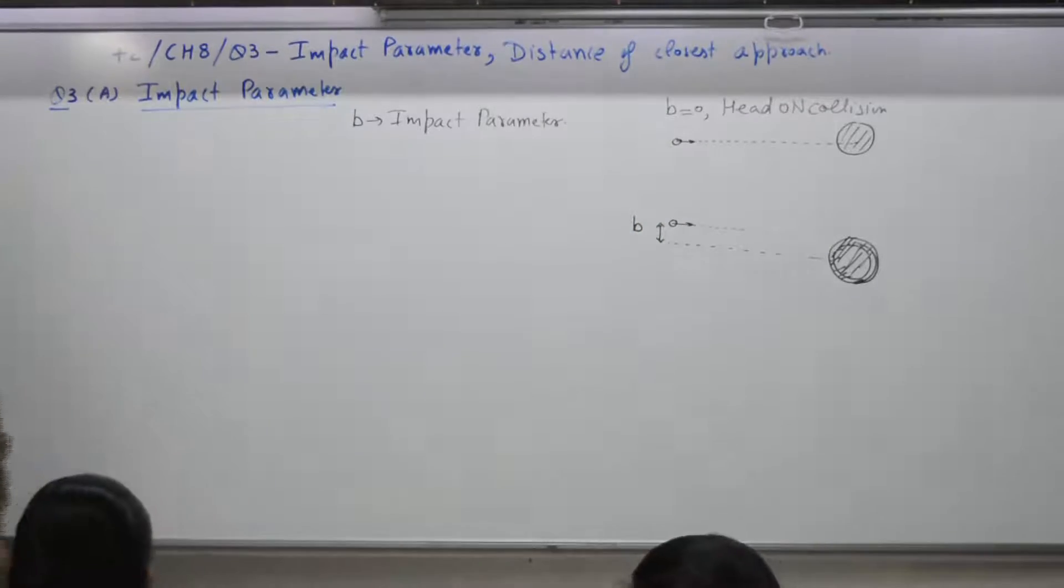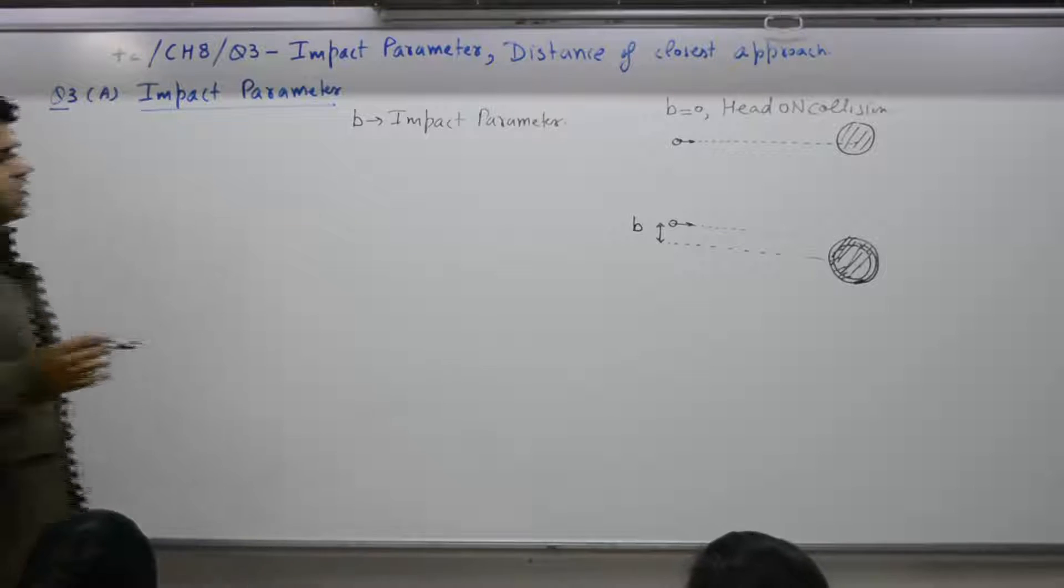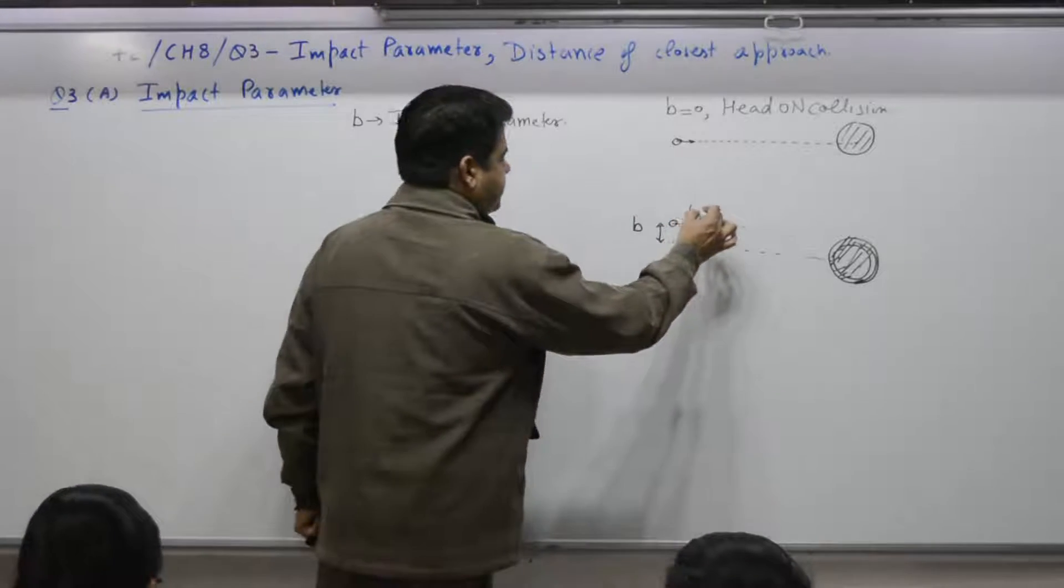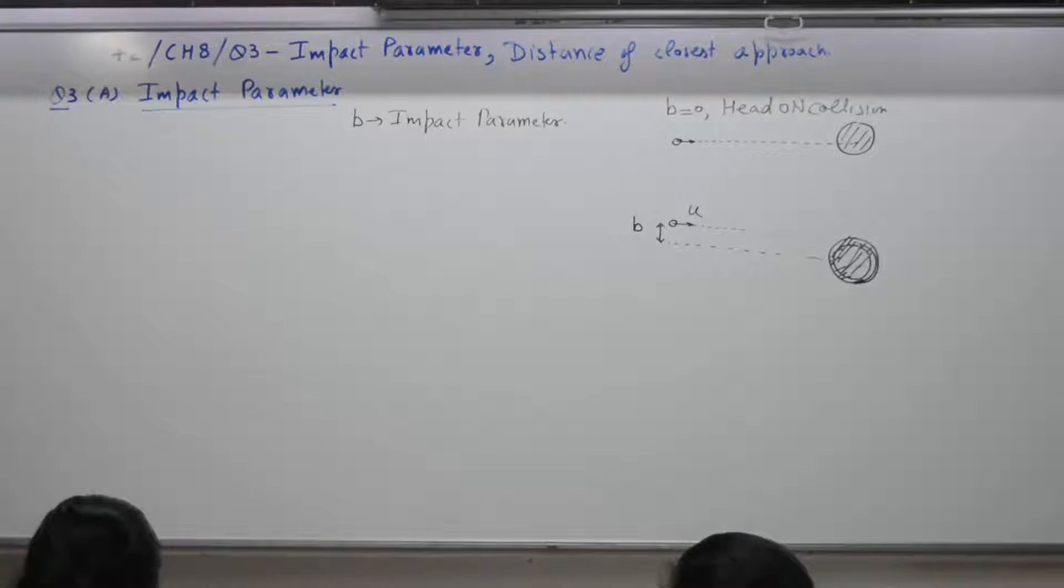So as per definition, impact parameter is a perpendicular distance. Of what? Initial velocity. This is the initial velocity, say U. Of alpha particle from the center of a nucleus. If B is small, alpha particle suffers large deflection.